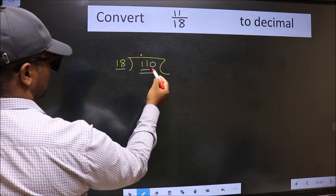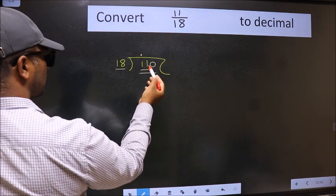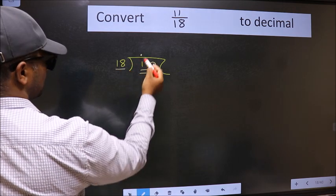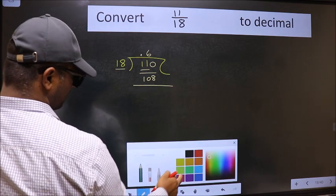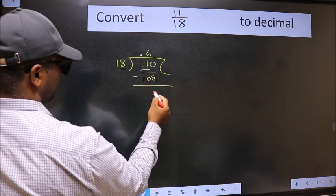A number close to 110 in 18 table is 18×6=108. Now we should subtract, we get 2.